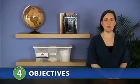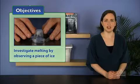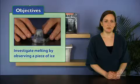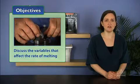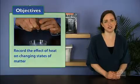In Activity 4, Melting Ice, students investigate melting, the change in state of a solid to a liquid, by observing a piece of ice. They first discuss the variables that affect the rate of melting, and then begin a changing states chart on which they record the effect of heat on changing states of matter.